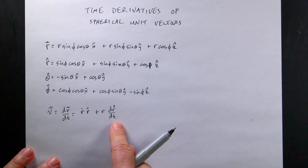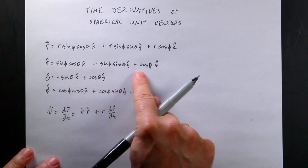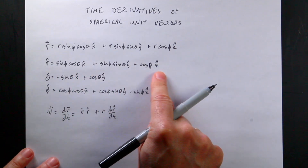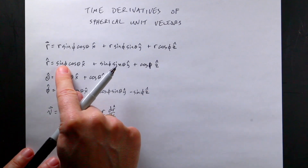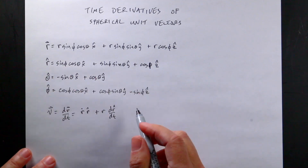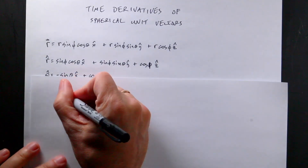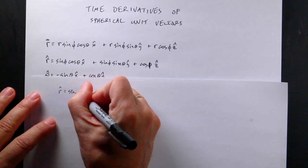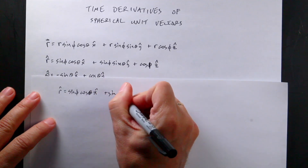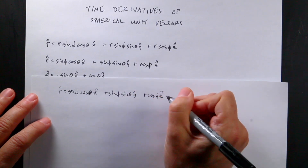To find d(r_hat)/dt, I need to write r_hat in terms of Cartesian coordinates, because the Cartesian unit vectors x_hat, y_hat, and z_hat do not change with time. So: r_hat equals sine(phi) cosine(theta) x_hat, plus sine(phi) sine(theta) y_hat, plus cosine(phi) z_hat.